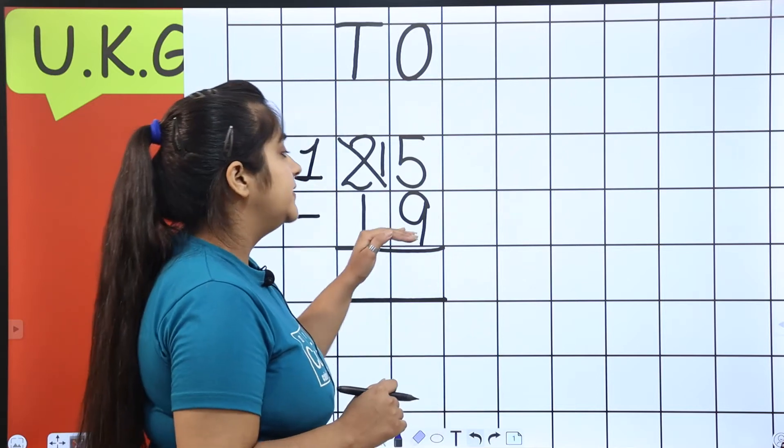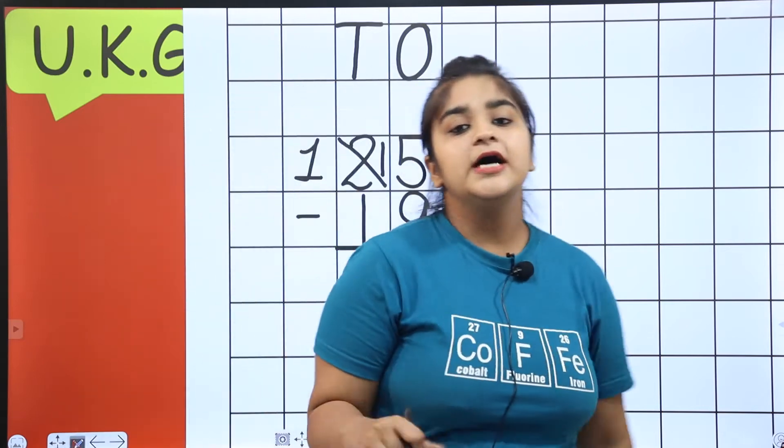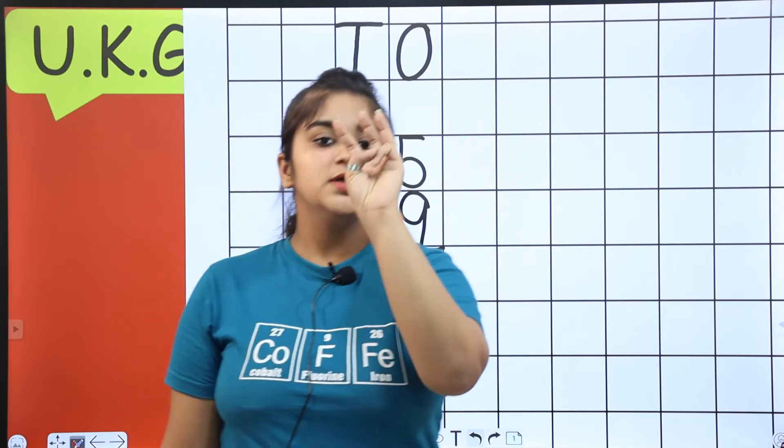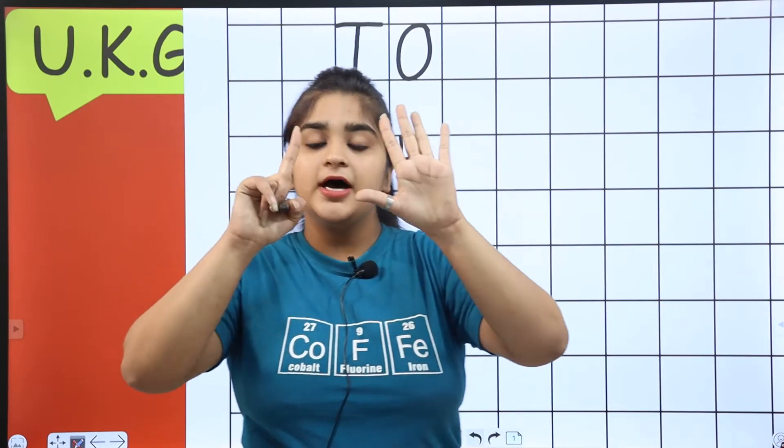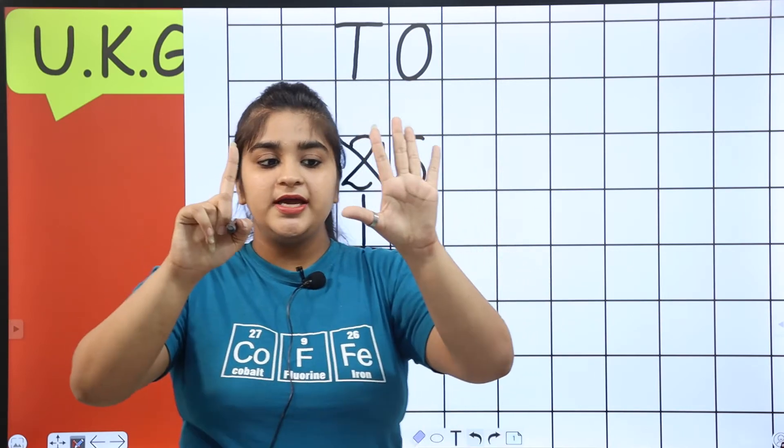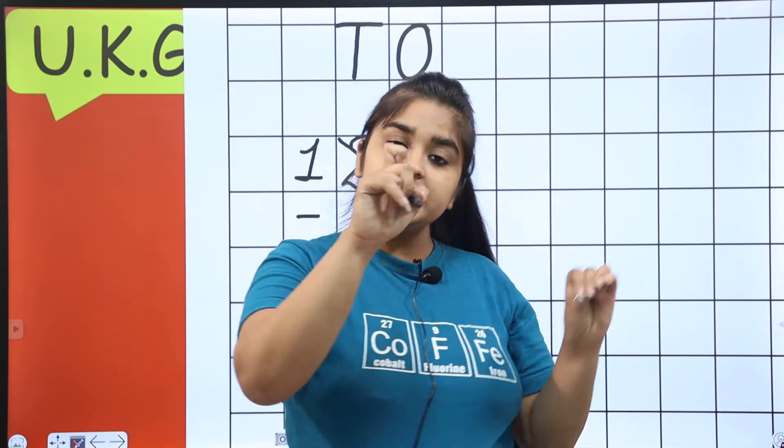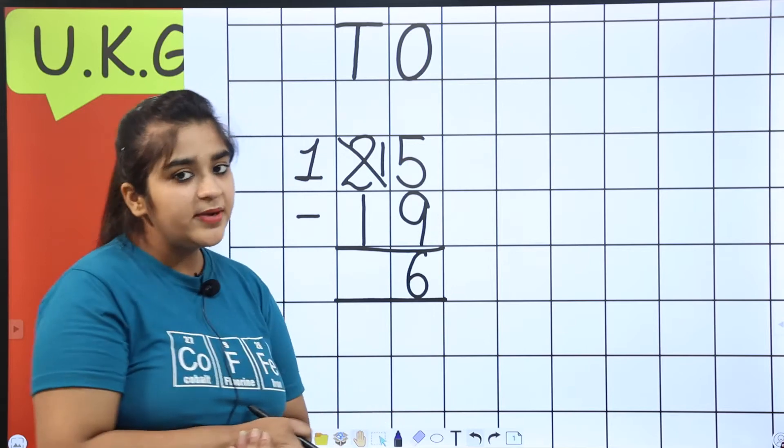So, what do we do? We will do 15 count. How do we do? After 9, 10, 11, 12, 13, 14, 15. Do it. Now, how many fingers have? Let's count. 1, 2, 3, 4, 5, 6. So, what is the answer? 6. This is the method.